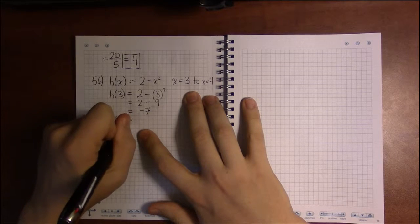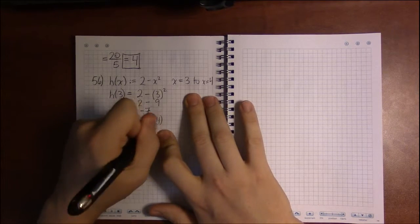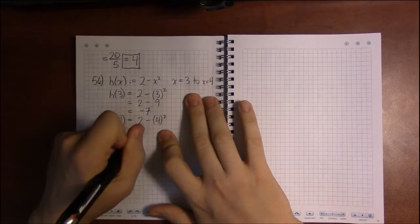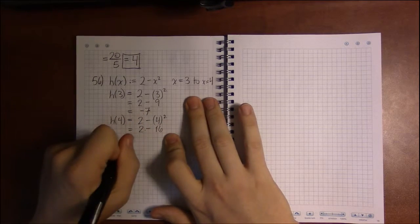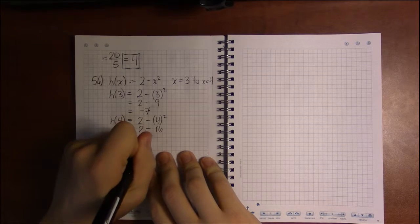When x is 4, we get 2 - 4². And 4² is 16, and 2 - 16 is -14.